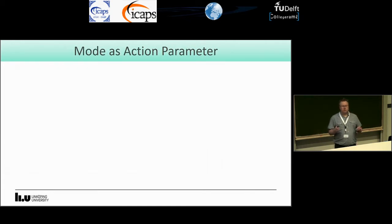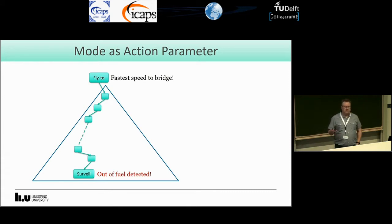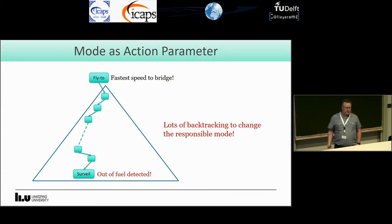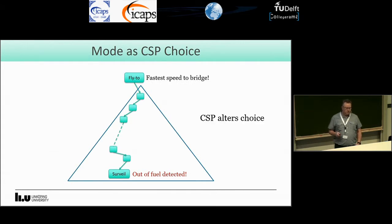Suppose we choose to fly to the bridge at the fastest speed, then continue surveilling, refueling, and doing many things, and then want to surveil again — but suddenly we are out of fuel. We have a problem because we have a forward chaining planner, and the choice that caused the problem is at the top, so we have to backtrack all the way. Instead, we lift the mode choice from the planner — the planner just adds actions like fly and surveil — and lift this choice into a global variable in a CSP. Now the CSP is responsible for choosing, and if we run out of fuel it can globally alter the first action's mode to medium speed.